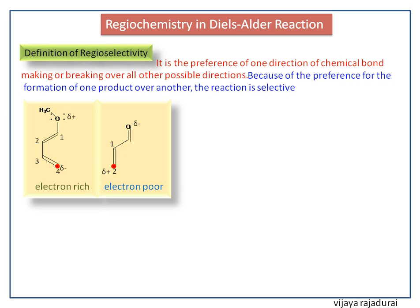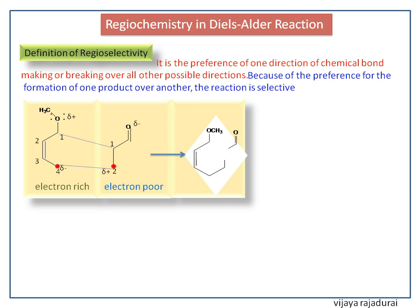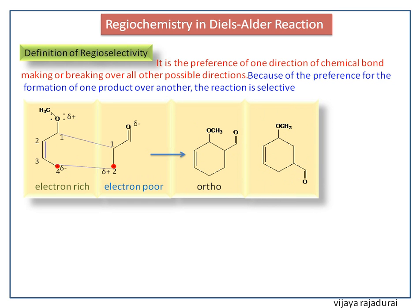Now we match the charges — it is a 4 plus 2 Diels-Alder reaction. In this reaction we get a 1,2-substituted adduct, or ortho-adduct. Here we cannot get the 1,3-adduct or meta-adduct.